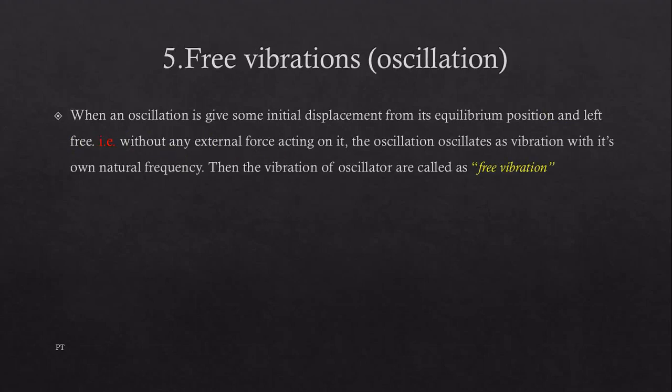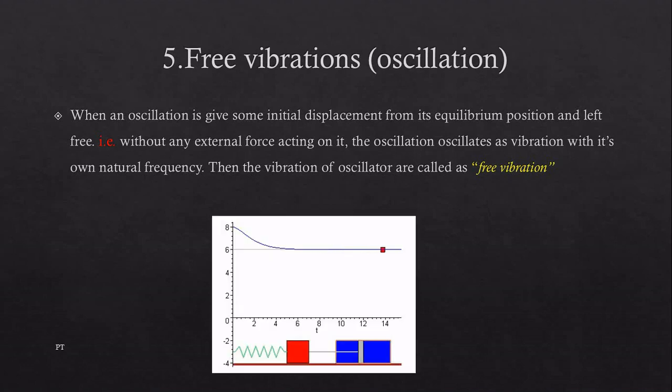Free vibrations or oscillations: when an oscillator is given some initial displacement from its equilibrium position and left free, without any external force acting on it, the oscillation oscillates as vibration with its own natural frequency. Then the vibrations of oscillation are called free vibration. As we can see over here, once we free the spring, once we free the piston, it is going to restore to its original position.